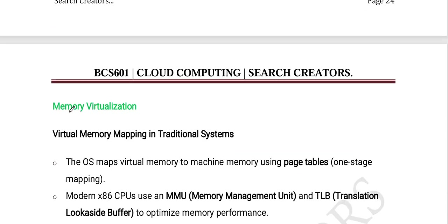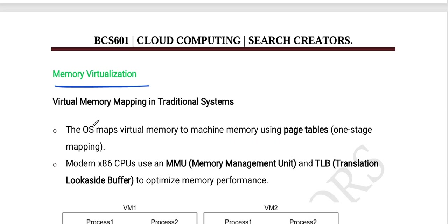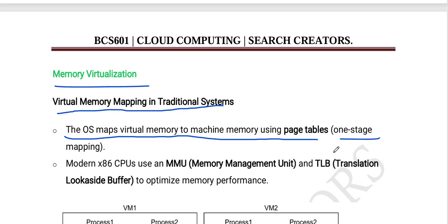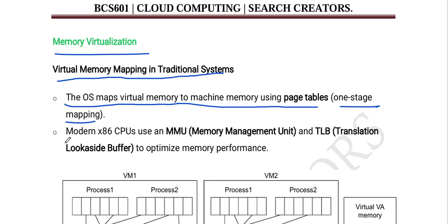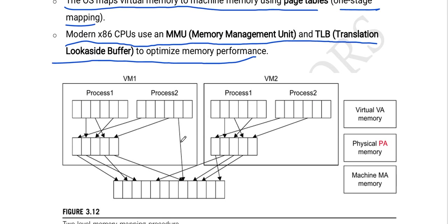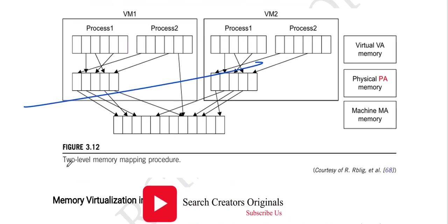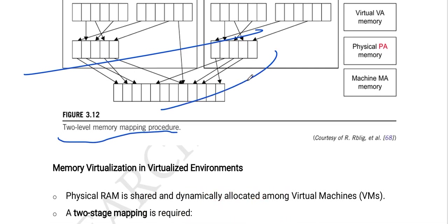Next is memory virtualization. In traditional systems, the OS maps virtual memory to machine memory using page tables — a one-stage mapping. Modern x86 CPUs use the MMU (memory management unit) and TLB (translation look-aside buffer) to optimize memory performance. In this figure, we can observe the two-level memory mapping procedure.